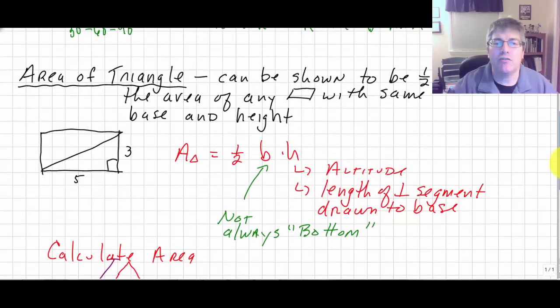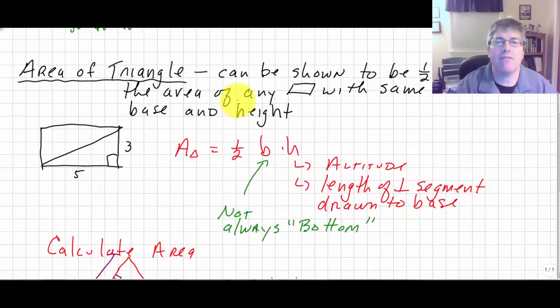And the area of a triangle can be shown to be one-half the area of any parallelogram with the same base and height. Well, since the area of a parallelogram is base times height, the area of a triangle is one-half base times height.